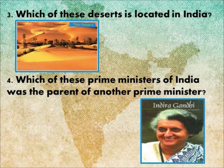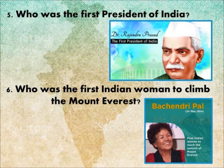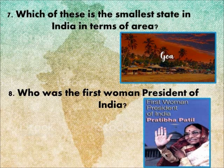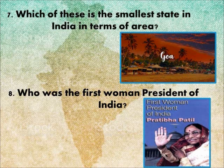Fourth, which of these Prime Ministers of India was the parent of another Prime Minister? The answer is Indira Gandhi. Fifth, who was the first President of India? Dr. Rajendra Prasad was the first President of India. Sixth, who was the first Indian woman to climb Mount Everest? The answer is Bachendri Pal. Seventh, which is the smallest state in India in terms of area? The answer is Goa. Eighth, who was the first woman President of India? The answer is Pratibha Patil.